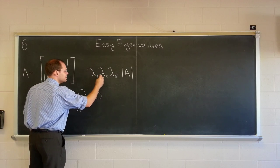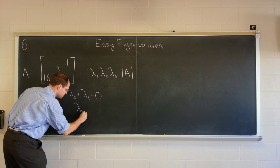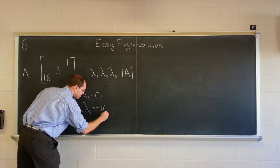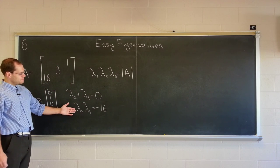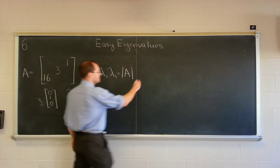Because all three times this times this equals minus forty-eight. Cancel the three, lambda two times lambda three equals minus sixteen. So they're opposites, and their product is negative sixteen. So they've got to be four and negative four.